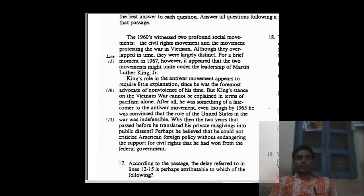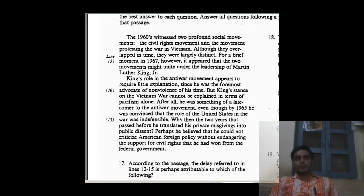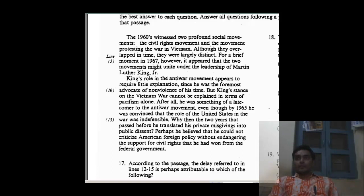This is a smaller RC with two paragraphs. We are going to read the first line three times of each paragraph, explore external knowledge and common sense, and then use three methods for eliminating or picking the options. The 1960s witnessed two profound social movements: the civil rights movement and the movement protesting the war in Vietnam. The Vietnam War was one of the most deadly wars the US fought, with huge casualties, and the civil rights movement was about getting equal rights to African-Americans.